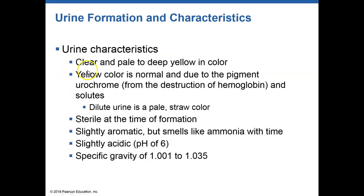What does urine look like? In a person who is normally hydrated, urine will be clear to pale or yellowish in color. Urine typically has a slight ammonia smell, should have a pH of about six, and should have a specific gravity that is a little bit higher than water's specific gravity.